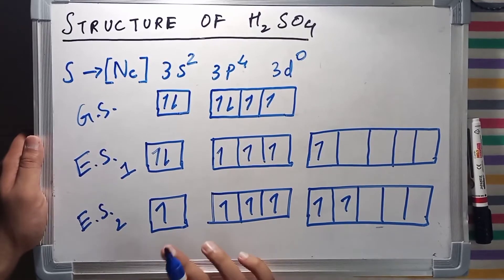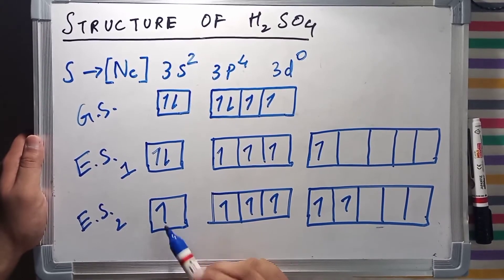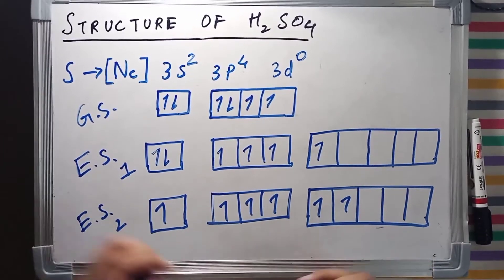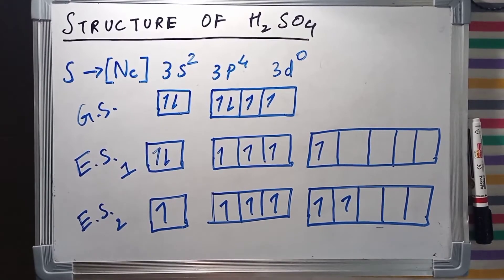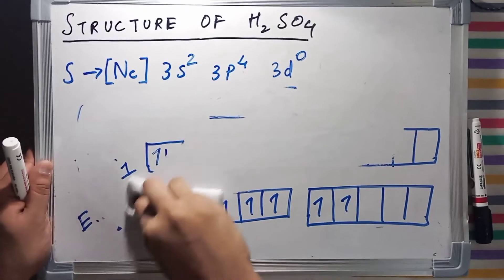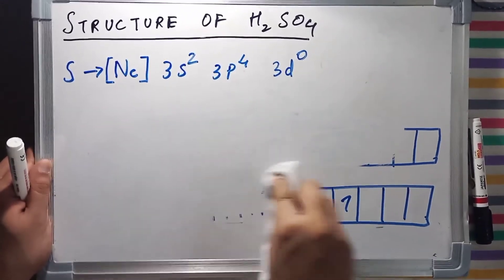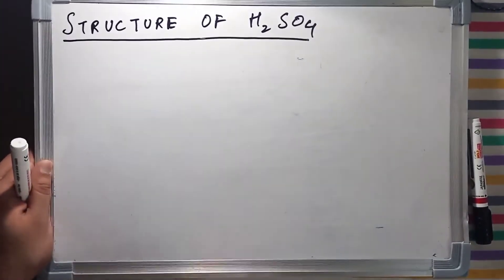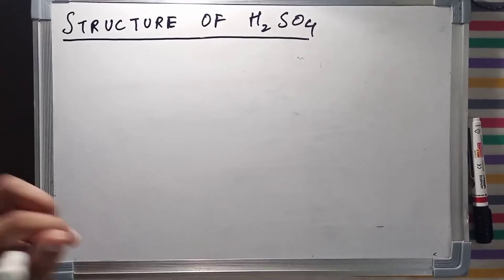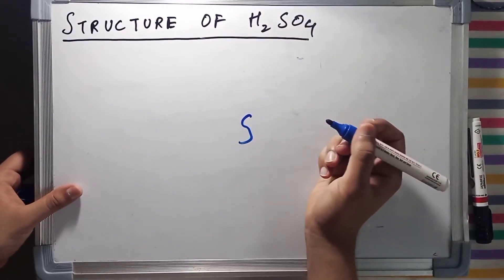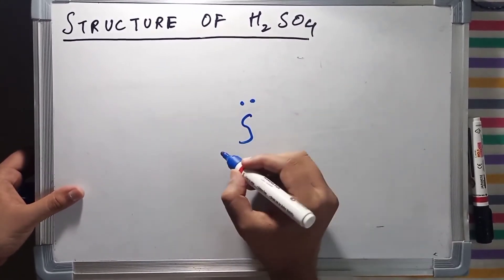As you can see, sulfur now has 6 unpaired electrons: 1, 2, 3, 4, 5, 6. Now we are going to draw the structure by Lewis dot structure method. So sulfur has 6 unpaired electrons.